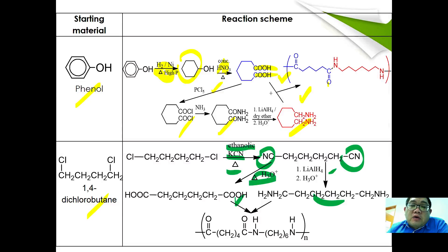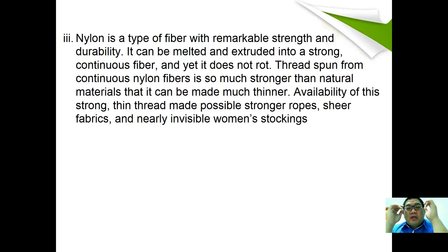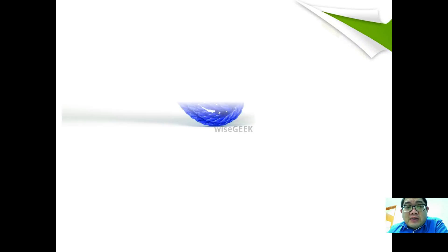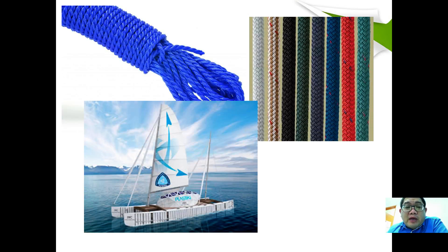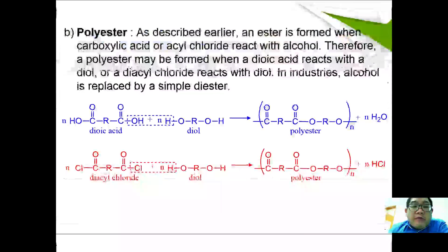Some properties of nylon include the following: nylon is a type of fiber with remarkable strength and durability. It can be melted and extruded into a strong continuous fiber, and it does not rot. Thread spun from continuous nylon fiber is much stronger than natural materials and can be made thinner. With these properties, nylon is suitable for use as ropes, sheer fabric, and near-invisible women's stockings. Here are some pictures showing a nylon rope used to tie yards, and women's stockings made from nylon.